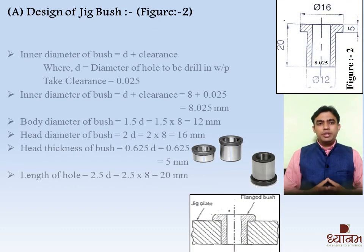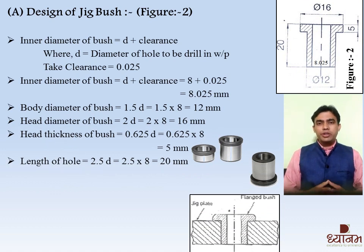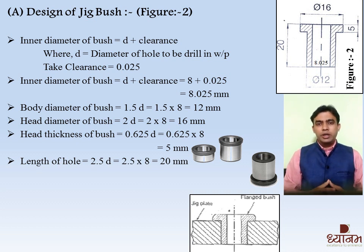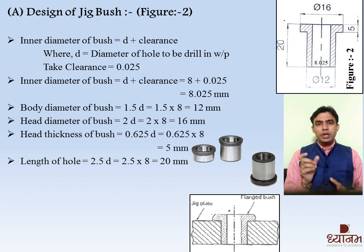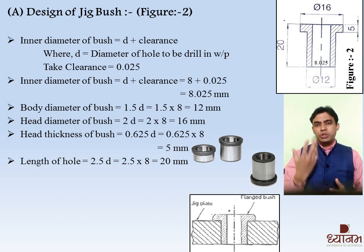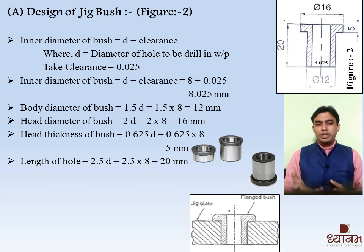Let's start with the design of Jig bush. The first formula is inner diameter of bush, which is D plus clearance, where D represents the diameter of the hole to be drilled in the workpiece. D is equal to 8 mm, and the clearance is 0.025 mm, so the inner diameter of bush is 8.025 mm. The next formula is body diameter of bush, also known as the outermost diameter. The formula is 1.5 × D and the answer is 12 mm, as shown in the figure.